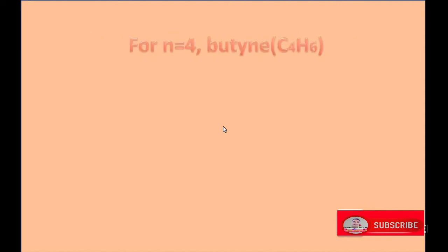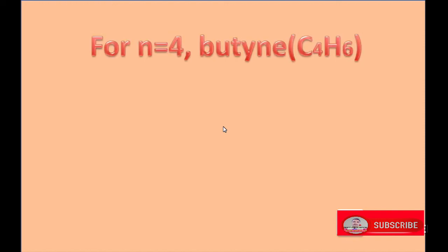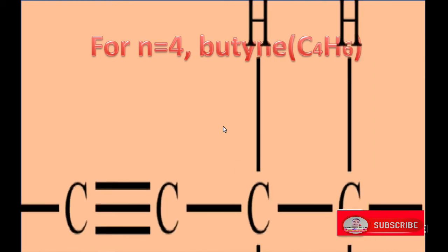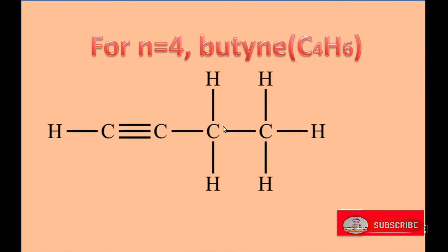For N equals 4, the alkyne is butyne, having molecular formula C4H6. There exists a triple covalent bond between two carbon atoms.